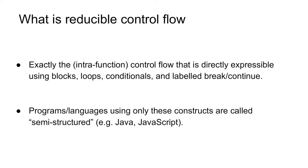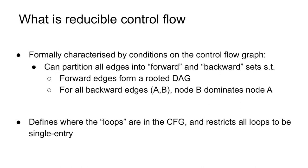Examples would be Java and JavaScript, where there is no arbitrary go-to instruction. We can formally characterize reducible control flow as a series of axiomatic conditions on the shape of a function's control flow graph. The control flow graph of a function is reducible if we can partition the edges of the graph into a forward and a backward set, such that all the forward edges taken together form a rooted DAG from the start of the function, and for all backward edges AB, node B dominates node A.